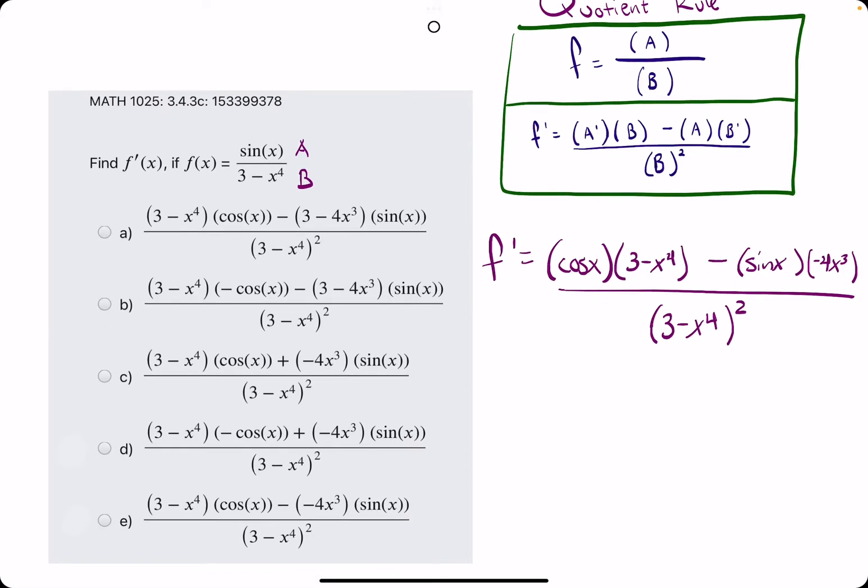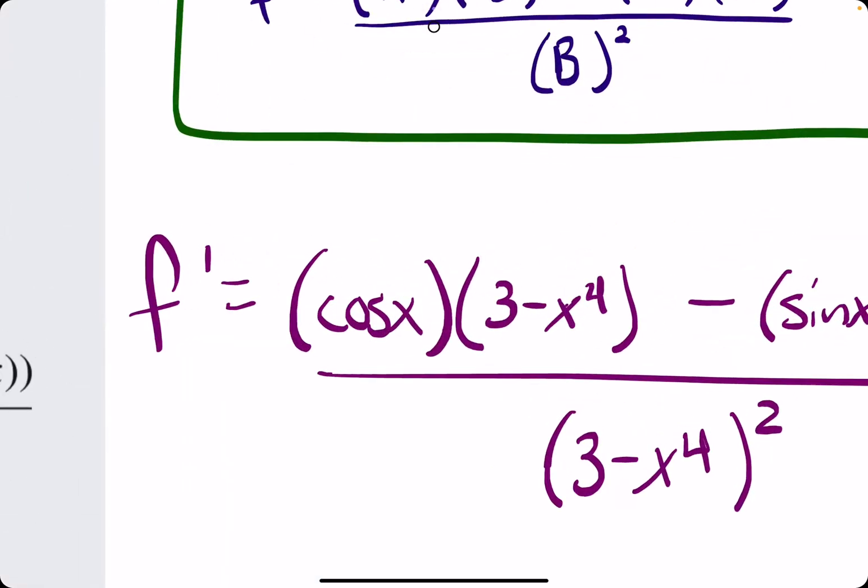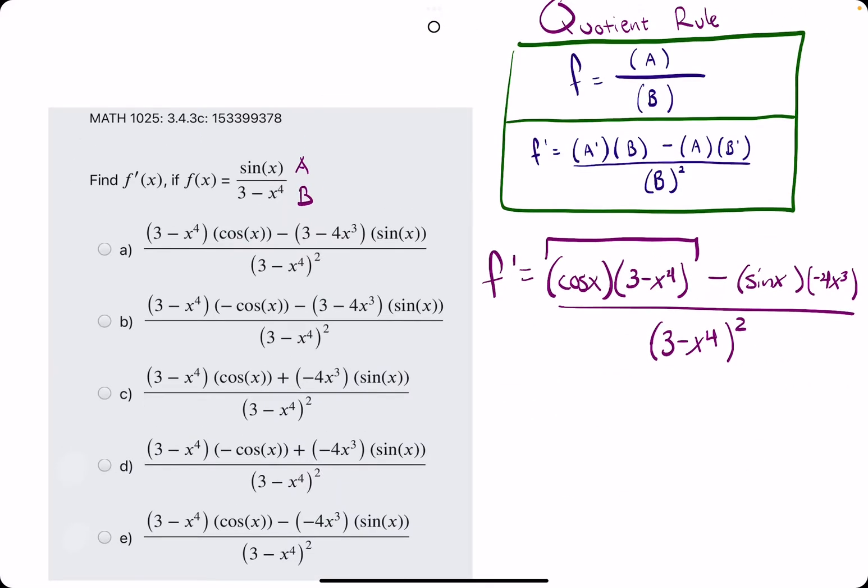It's helpful to look for B squared on the bottom, but it looks like all of these have B squared in their denominator. We do want cosine of x paired with 3 minus x to the 4th. We see it here. We don't see it here because there's a negative. So B is off the table. We see it here. We don't see it here because there's a negative. And we see it here.